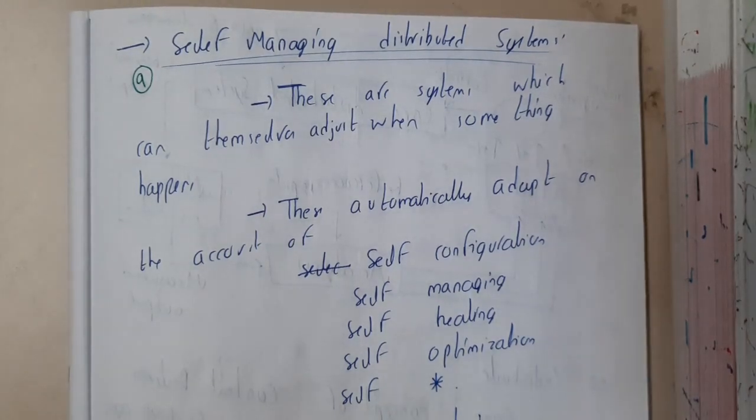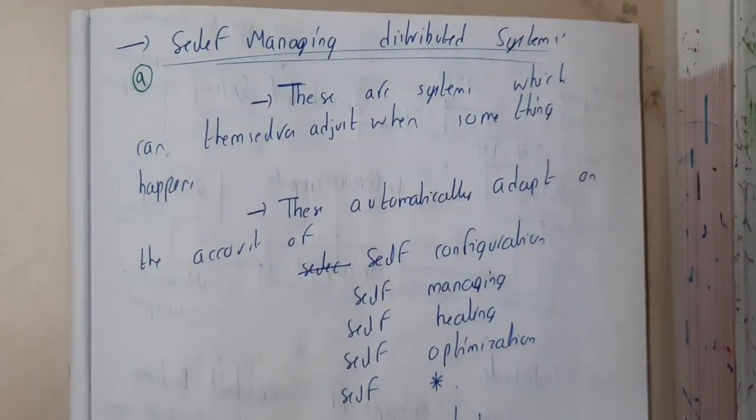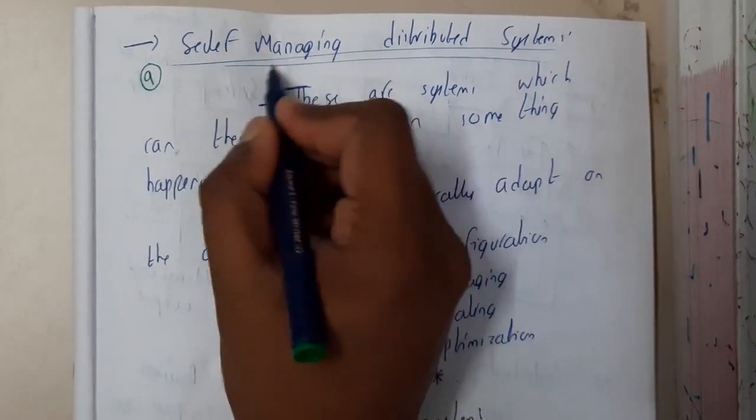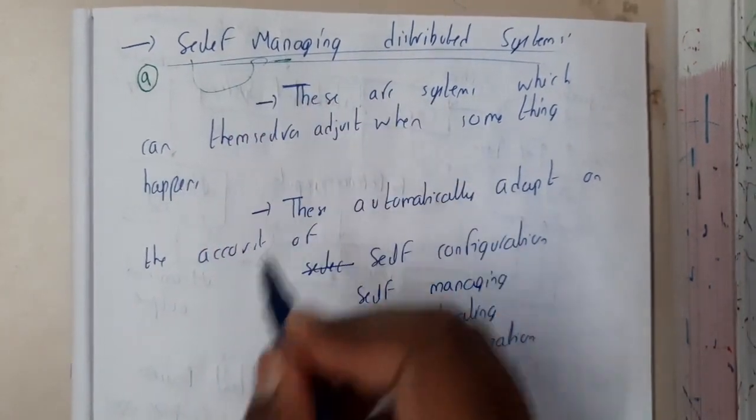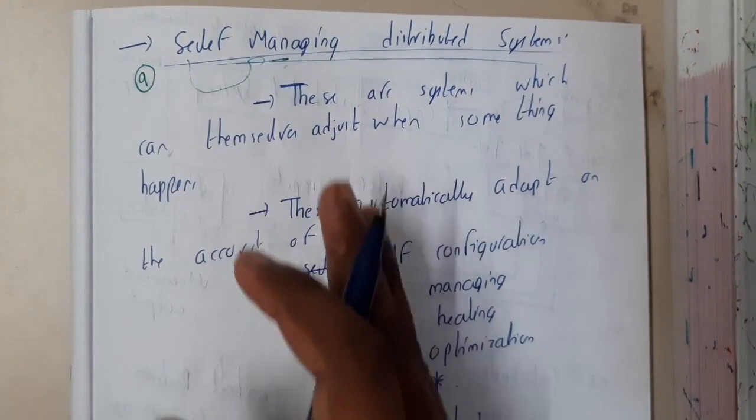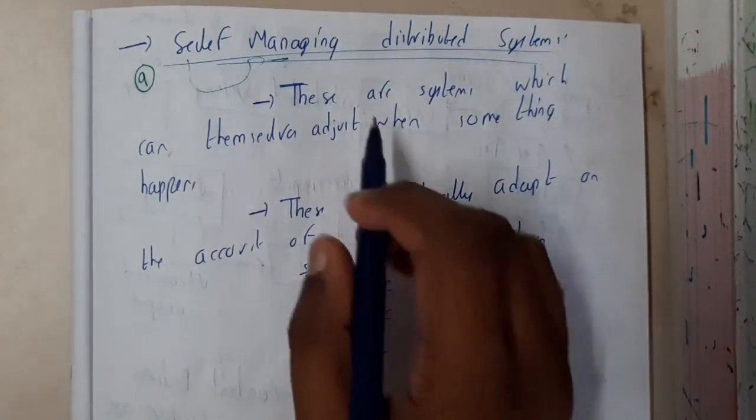Hello guys, we are back with our next lecture. In this lecture, let us go through the concept of self-managing distributed systems. Basically from the name you can say these are managing something by themselves, so they are adapting to something. That is the concept of self-managing distributed systems.